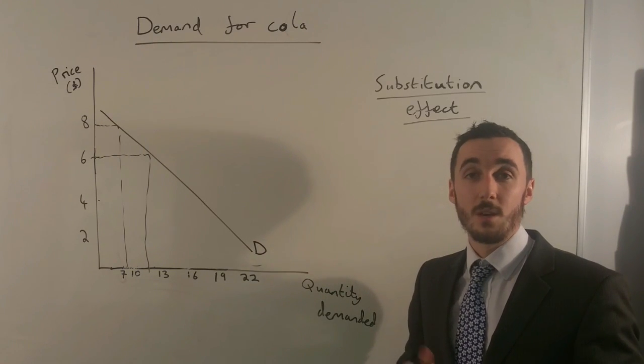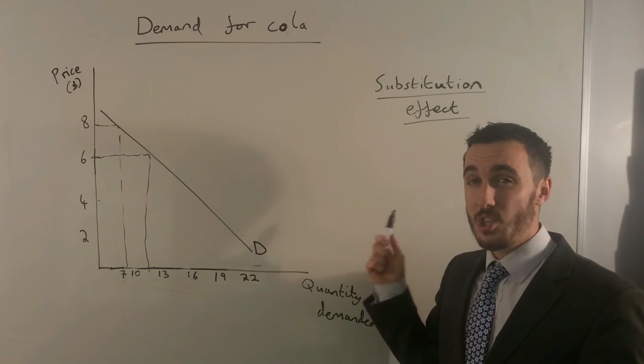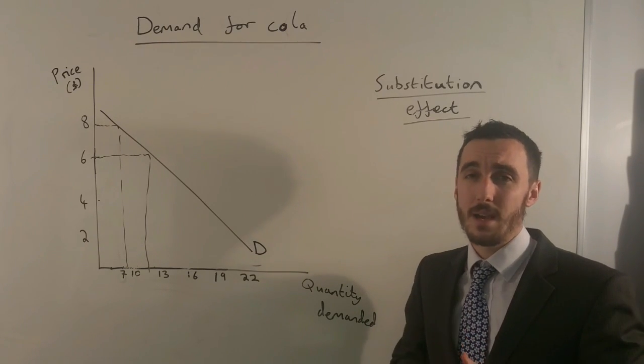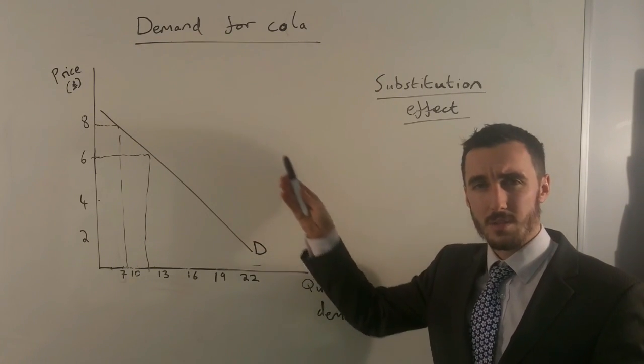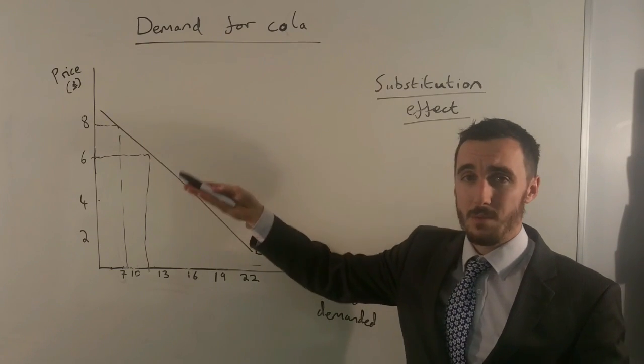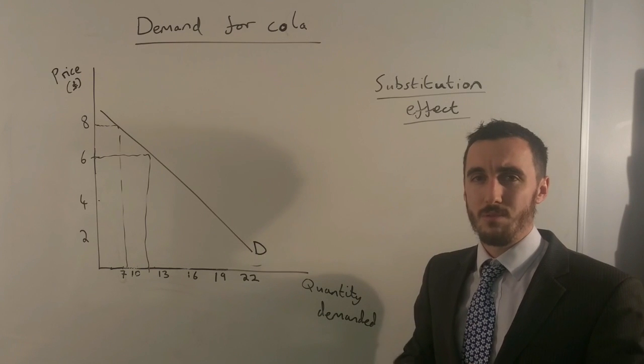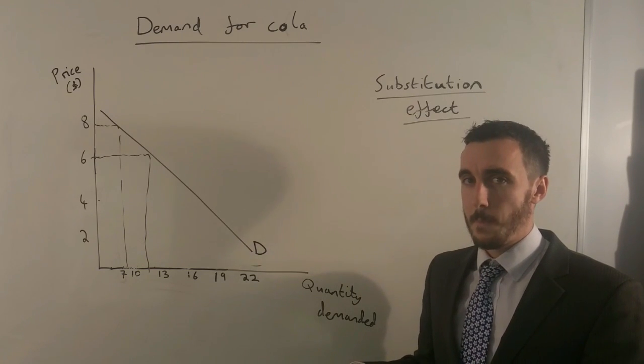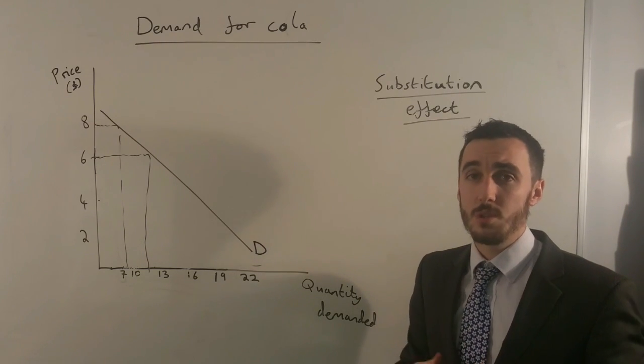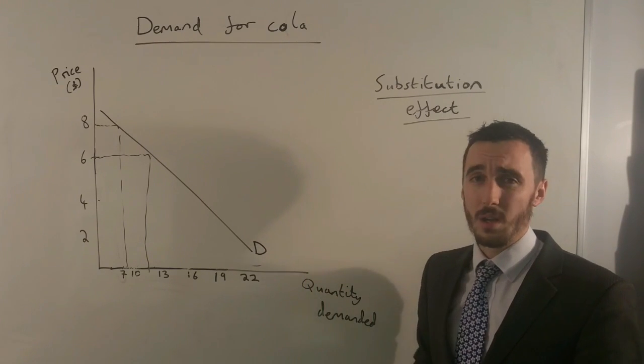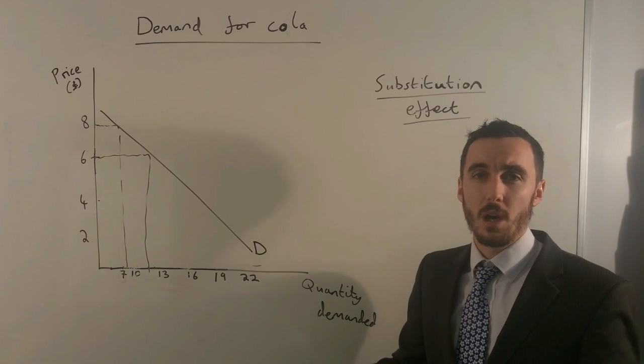The other reason for the law of demand is the substitution effect. Now the substitution effect simply tells us that as the price of cola goes down, in this case from £8 to £6, that's going to make all other similar products seem relatively more expensive. So being a rational consumer, if all of the products are now more relatively expensive than cola, I'm clearly going to buy more cola.